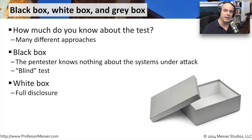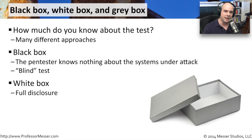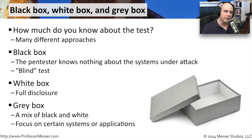The exact opposite would be a white box, where you give someone a network map — you already know the IP addresses of your database servers and their version numbers — and you do very specific vulnerability checks and penetration tests against those systems. A gray box, obviously, is something in between: you know a little bit about the network and systems, but not everything. Tests in that case may be broader to determine exactly what might affect the systems in your environment.